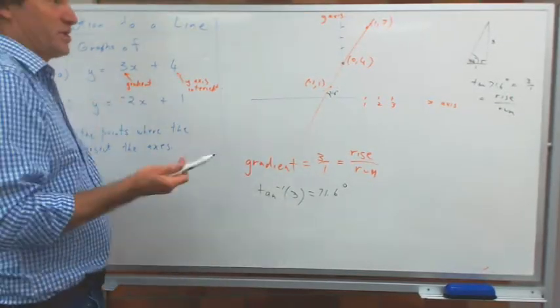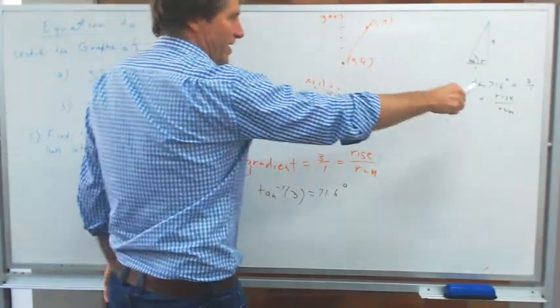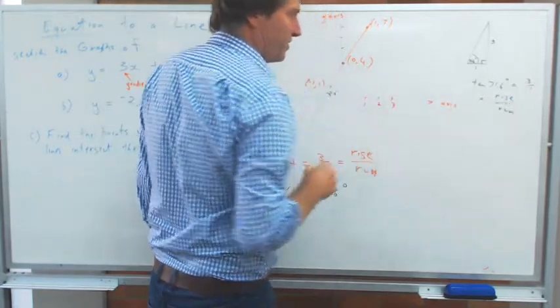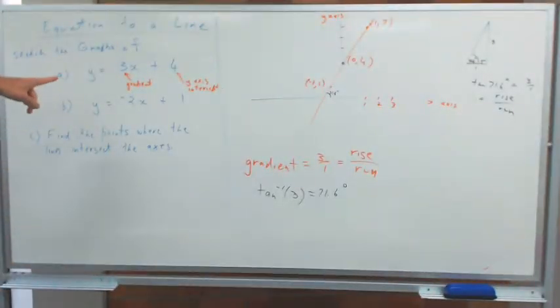If the question says, okay, the straight line passes through 0, 4, and it's 71 degrees off the x-axis, then you have to use this function to get the gradient to come up with the 3 in the formula. And then we'll do some of those later on.